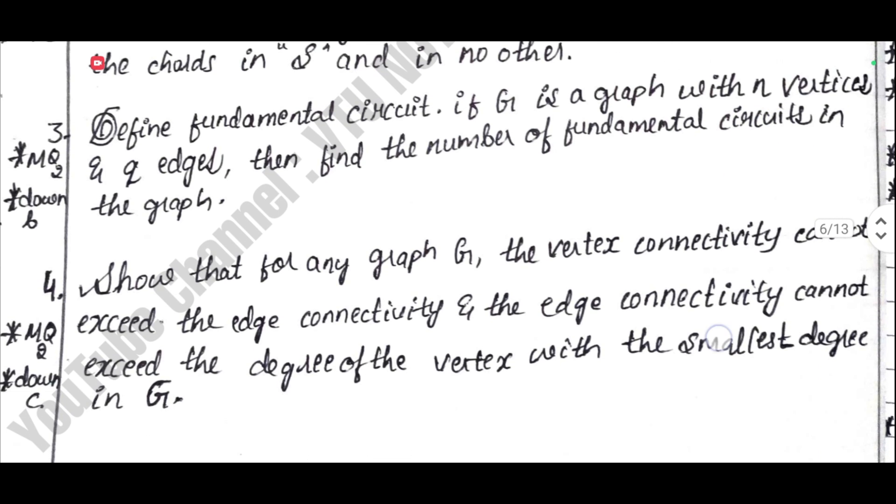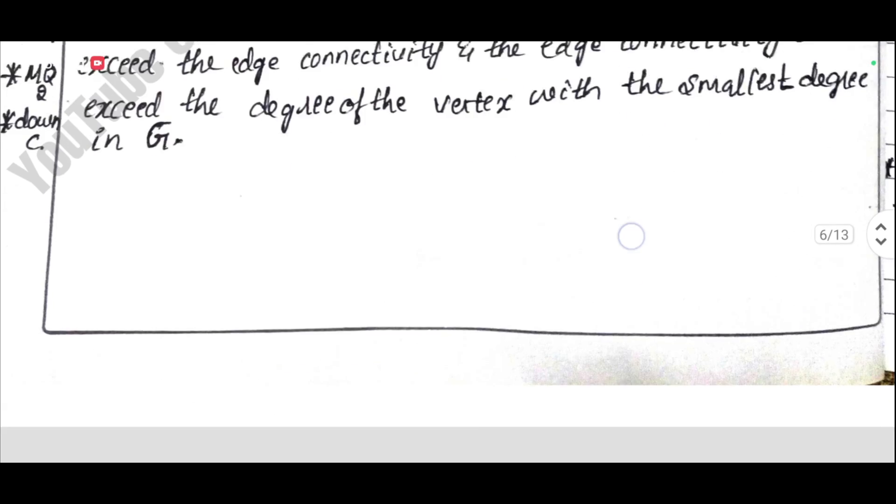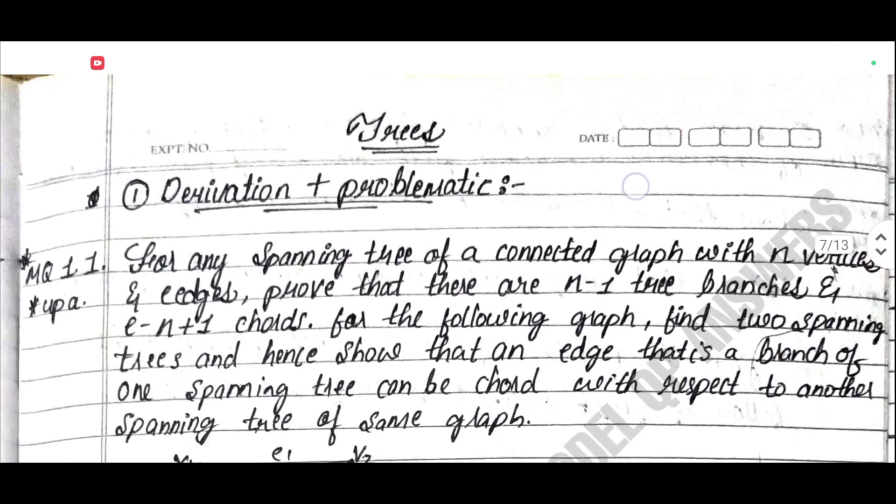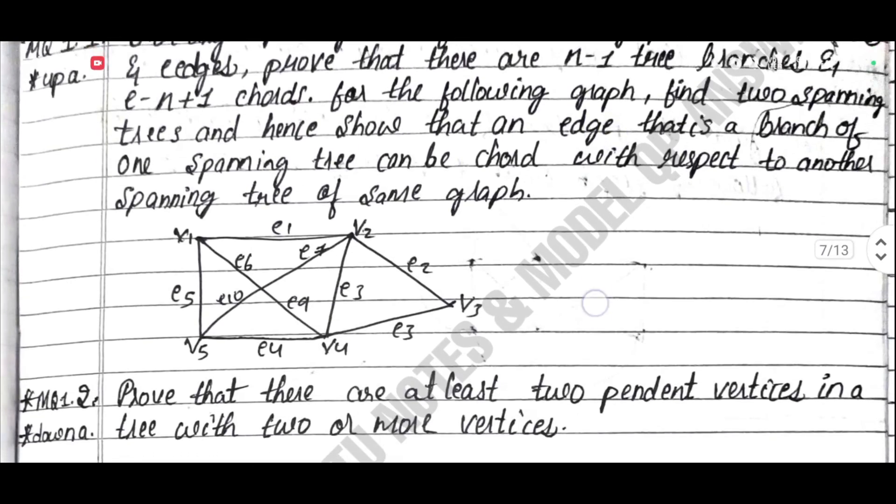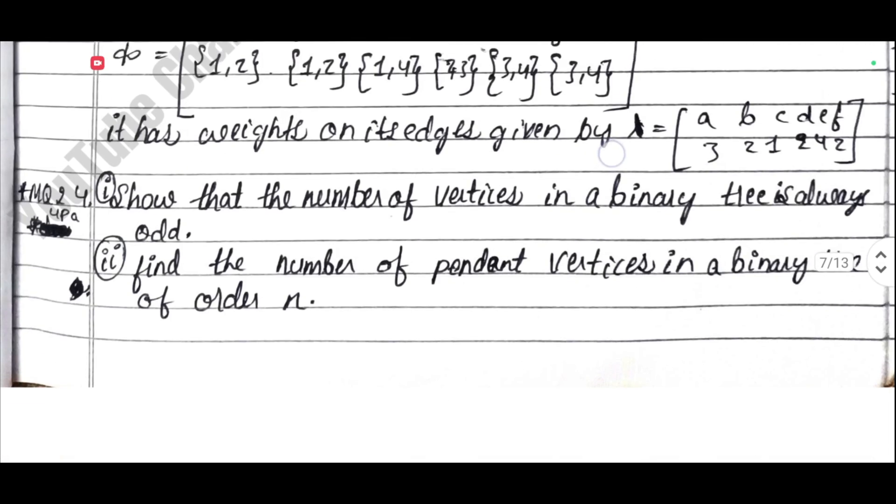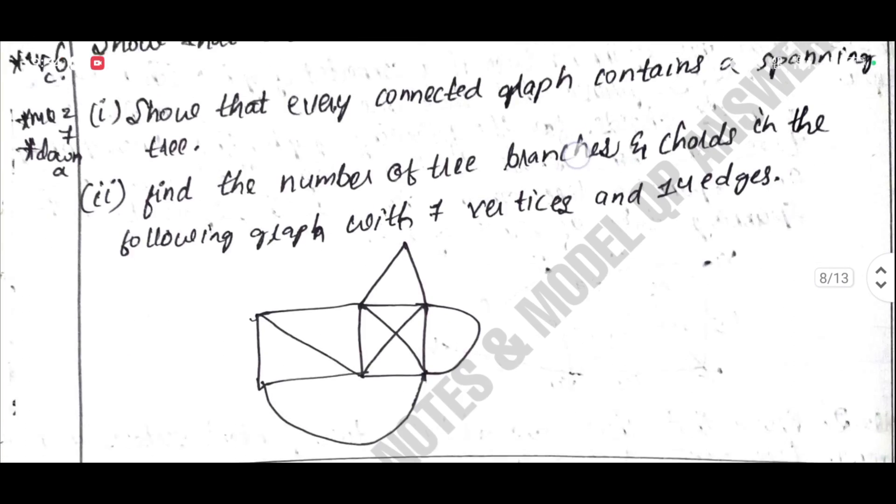3. For the remaining two modules, write them in a presentable manner. 4. Attempt all questions from the chosen slot in each module. 5. If you're unsure about any answer, attempt it at the end. Don't leave it blank.